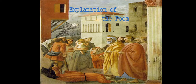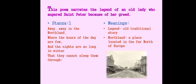Let's start the explanation of the poem. This poem narrates the legend — the historical story — of an old lady who angered St. Peter because of her greed. That lady was very greedy, and St. Peter is a Christian saint who used to go from one place to another to give religious messages. She made St. Peter very angry because of her greed. I will read one stanza and then explain the lines.